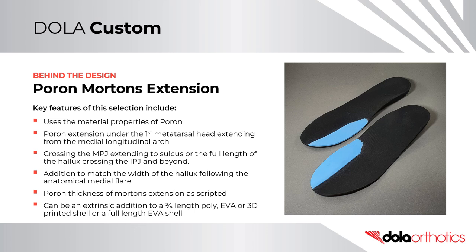A Poron Morton's extension uses the cushioning properties of Poron. It extends under the first metatarsal head from the medial longitudinal arch, crosses the MPJ extending to the sulcus or full length of the hallux, crossing the IPJ and beyond. The addition matches the width of the hallux following the anatomical flare. The thickness is prescribed by the practitioner. It can be an extrinsic addition to a three-quarter length poly, EVA, or 3D printed shell, or a full-length EVA shell.